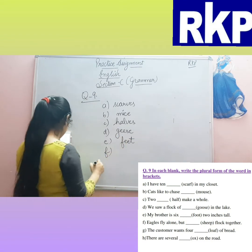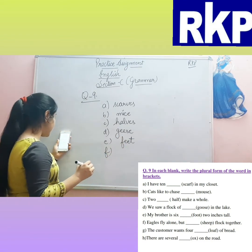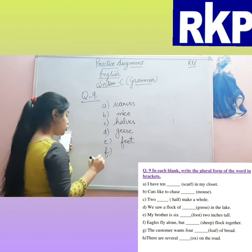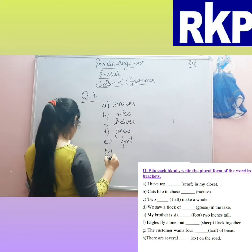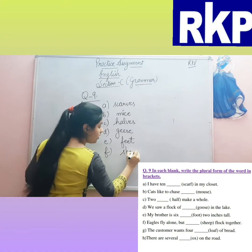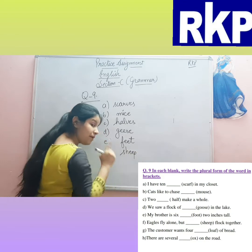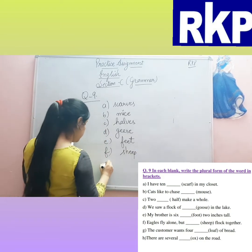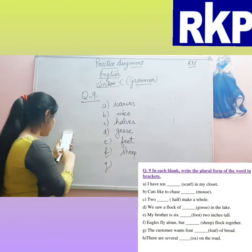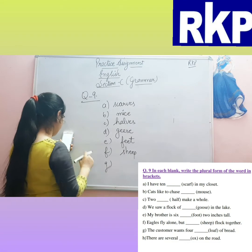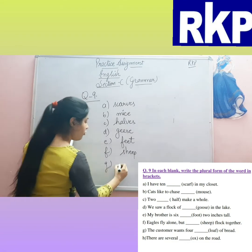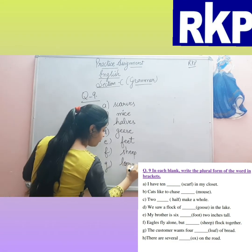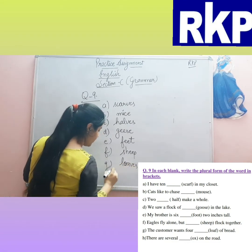F: 'Eagles fly alone but ___ flock together.' — Sheep. The plural of sheep is sheep only. G: 'The customer wants four ___ of bread.' — Loaves, L-O-A-V-E-S.